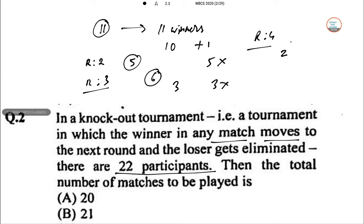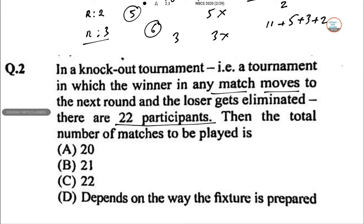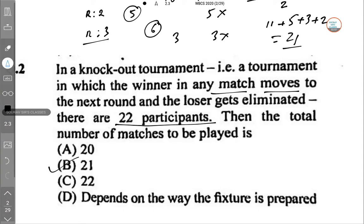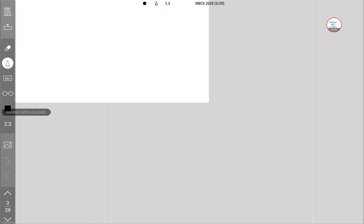So finally, in the first case, 11 plus 5 plus 3 plus 2. So the answer is 21, option number B. Next.